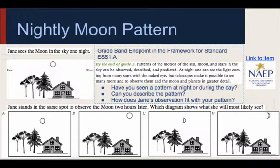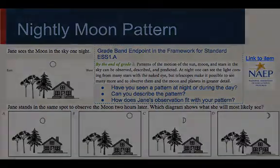Jane sees the moon in the sky one night. Jane stands in the same spot to observe the moon two hours later. Which diagram shows what she will most likely see? Encourage students to discuss patterns they have seen in the moon and sun — remember, we are talking about a two-hour period. Do any of the patterns discussed fit with what Jane sees? Which pictures do not fit with the pattern? How do you know?